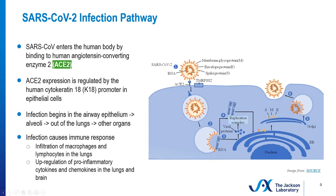Specifically, the SARS-CoV-2 infection pathway involves the ACE2 receptor. SARS-CoV-2 enters the human body by binding to the ACE2 receptor, which is expressed on a variety of cell types and tissues. Expression is regulated by the human cytokeratin-18 promoter in epithelial cells. Infection begins in the airway epithelium after you inhale the virus, progresses to the alveoli, and then can go out of the respiratory system into other organs.